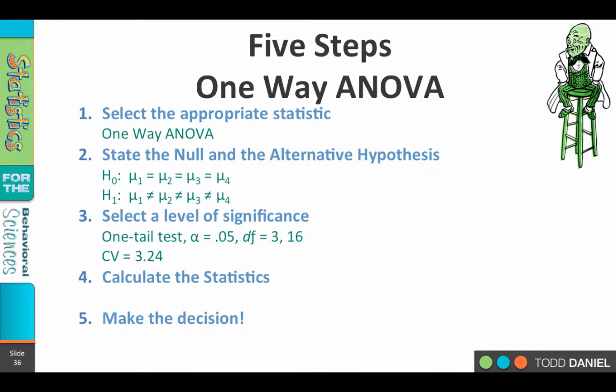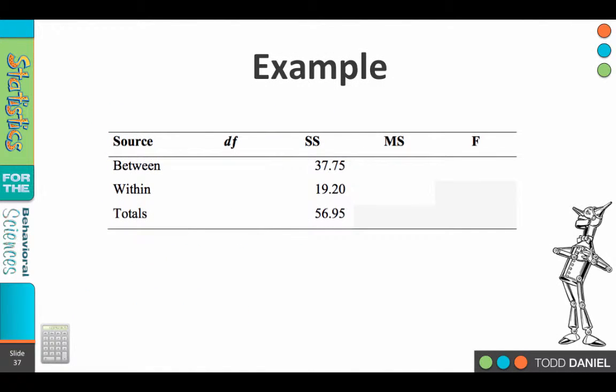Now we are ready to calculate our statistics using a one-way ANOVA. In this example, I've already given you the sum of squares and put them into an ANOVA summary table. So what I'd like you to do is pause the video, try to fill in the table as best you can, and then let's make sure that you know where all of these numbers come from.